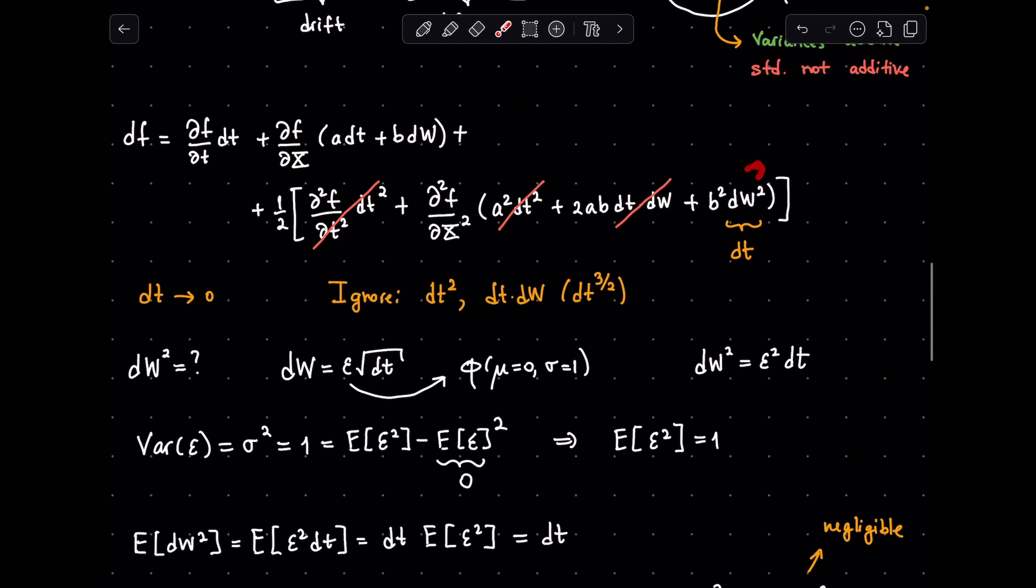Finally, grouping all the dt terms and putting back the arguments gives us the total derivative for a stochastic function f.